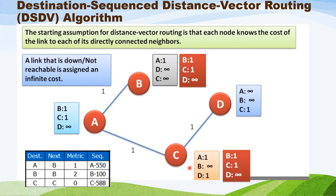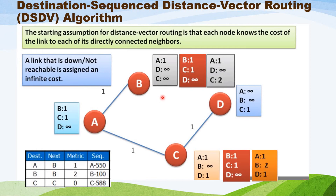Node A sends its routing information — B=1, C=1, D=infinity — to nearby nodes B and C. Upon receiving A's table, node B sees that C was infinity in its own table but A has C=1. Since it takes one hop to reach A and one more hop from A to C, the total hop count is two. So B updates C=2. The updated table for B becomes: A=1, C=2, D=infinity.